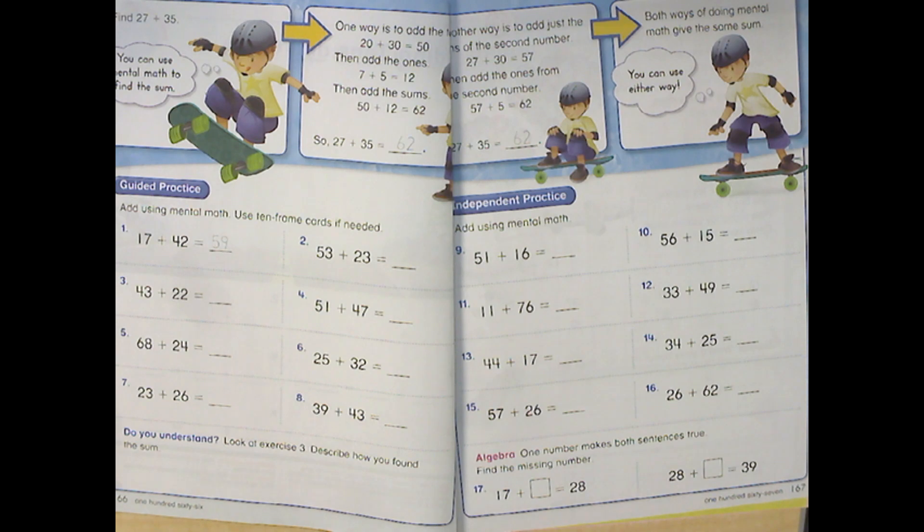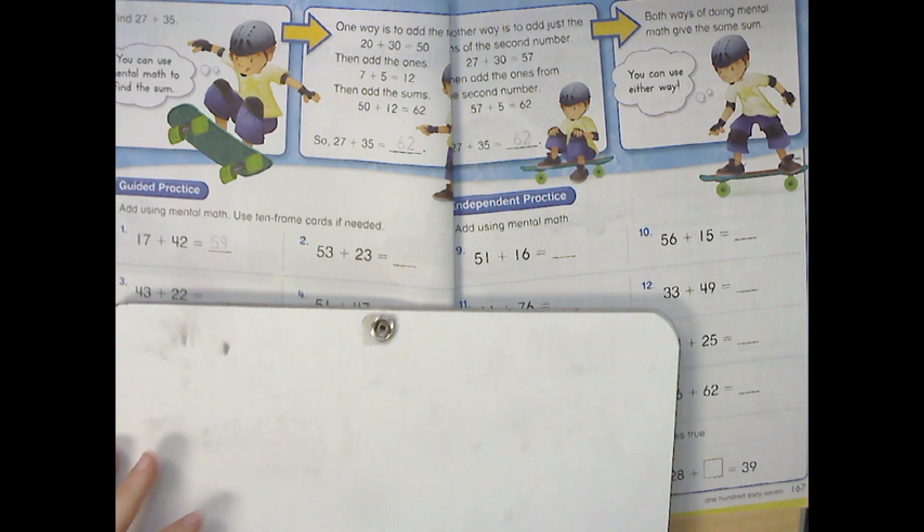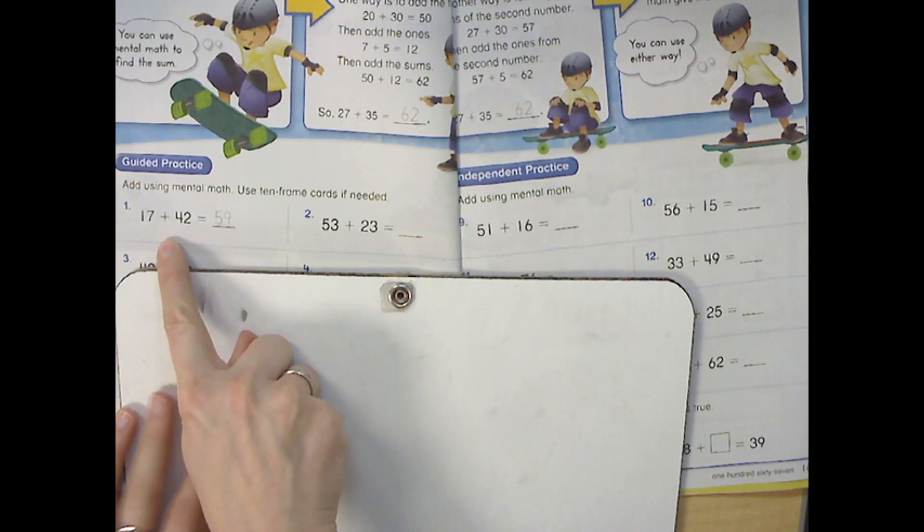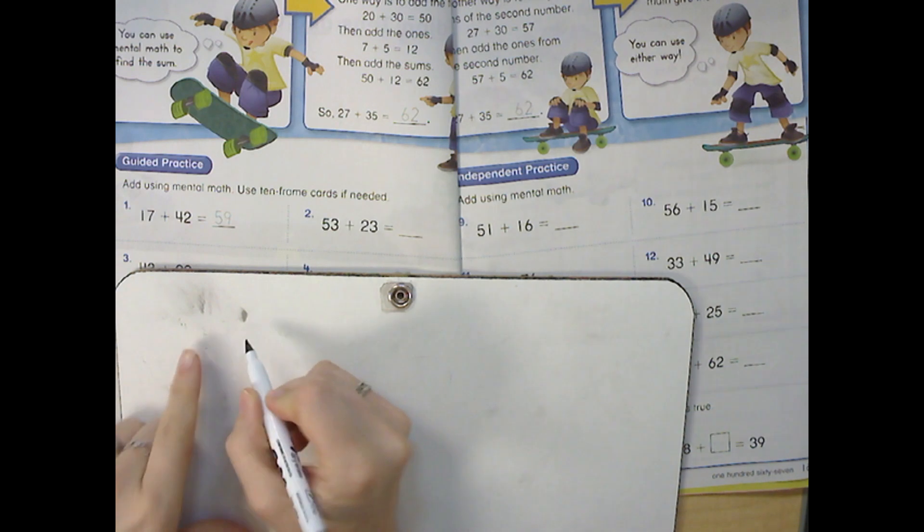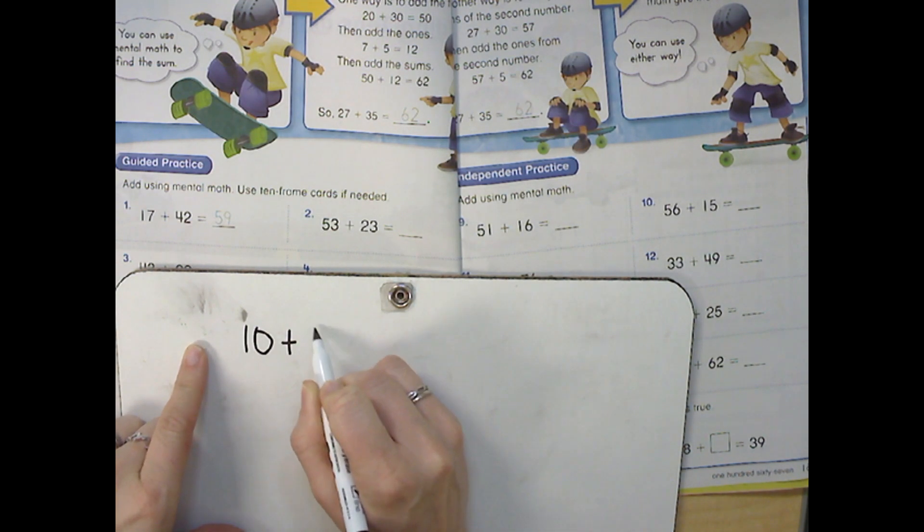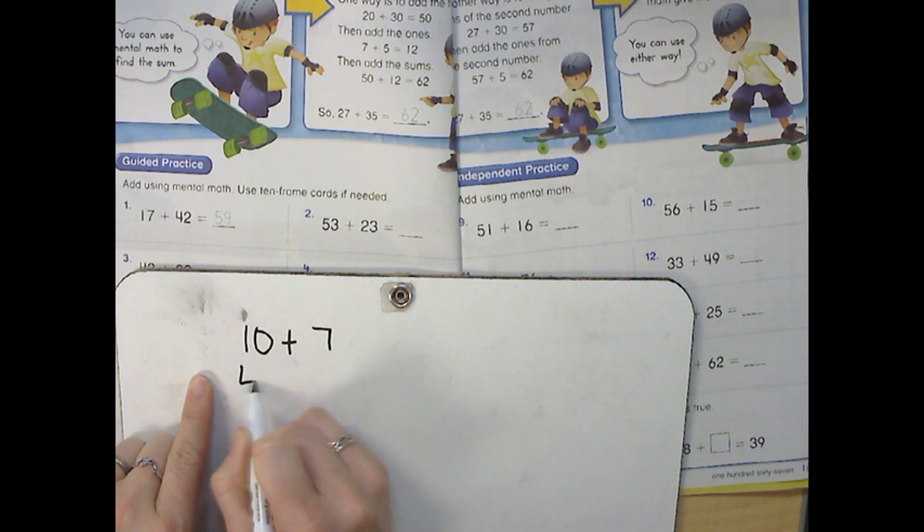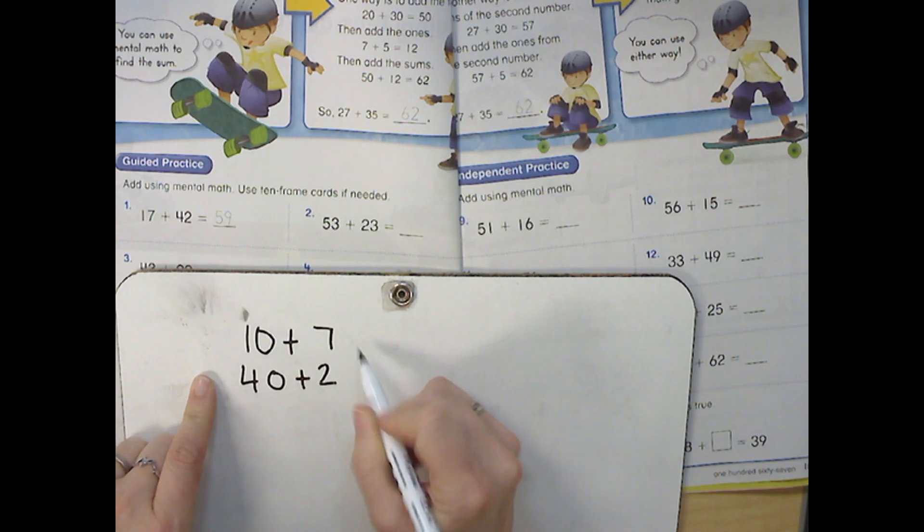If I was to use a whiteboard, it would look like this. If my problem was 17 plus 42, I could break it up into place value and say 10 plus 7 and 40 plus 2. This is expanded form, you guys.